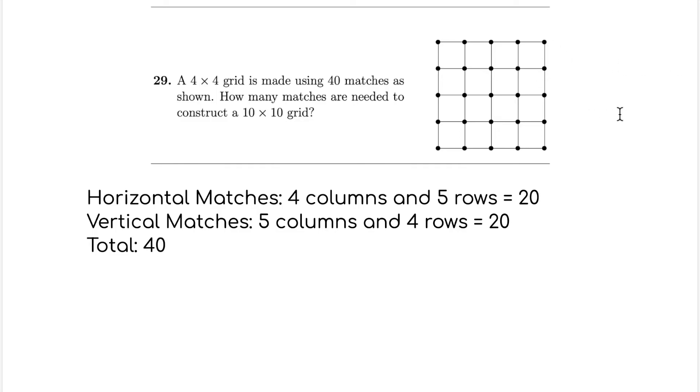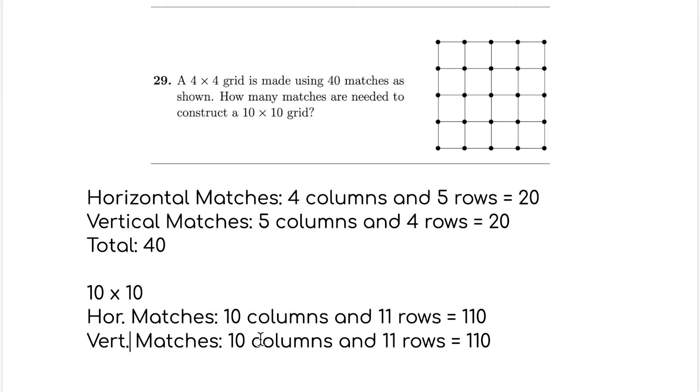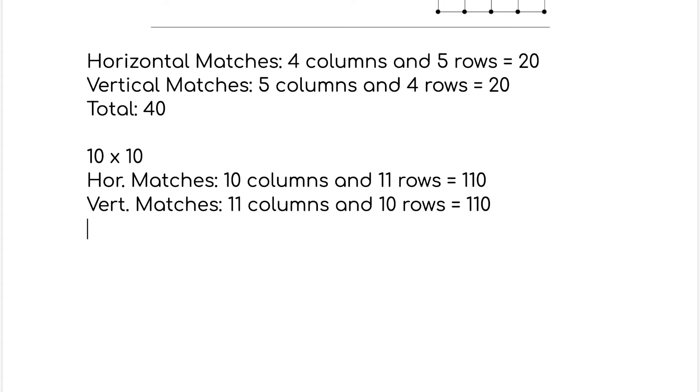So now let's look at what happens if we have a 10x10 grid. Here you will notice that there are four columns because it's a 4x4 grid. However, there are five rows because there is an extra one. So it's going to be one more than the grid size. So now let's go 10x10. So then horizontal, instead of having four columns and five rows, it means we're going to have 10 columns and 11 rows. So that is 110 if you multiply them together. And then vertical matches, instead we have 11 columns and 10 rows. That's still 110. So that means the total is going to be 220. So the answer is 220.